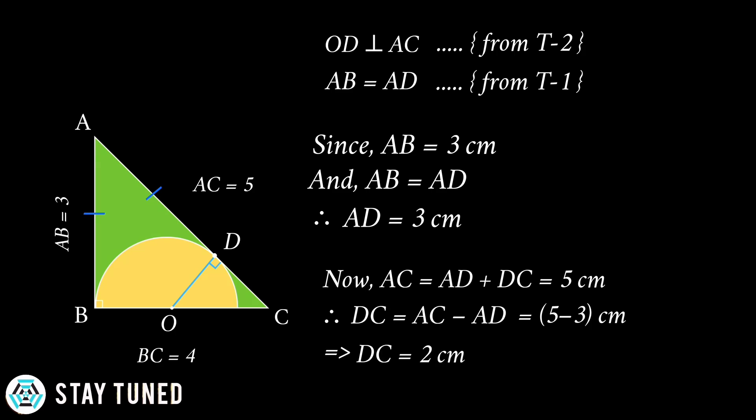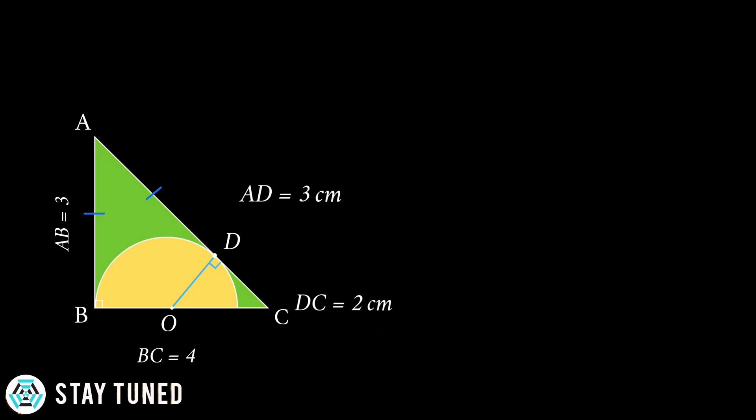So now we would substitute the values of AD and DC in the figure. Now for the final step, we will use the concept of similar triangles. So in triangle ABC and ODC,